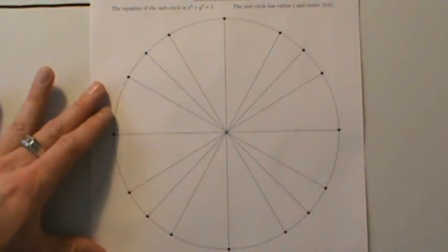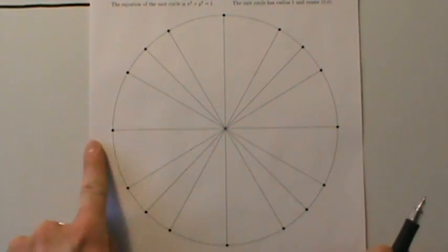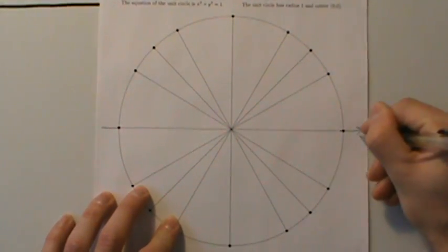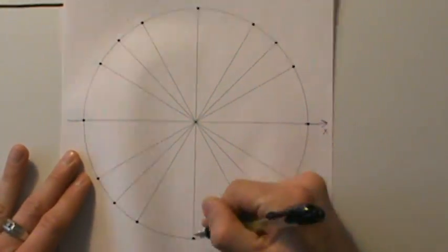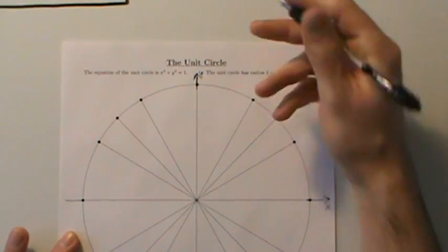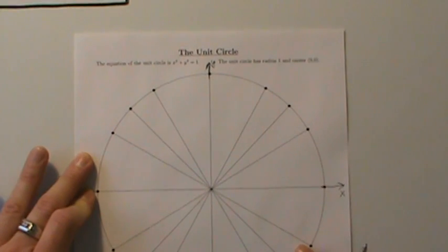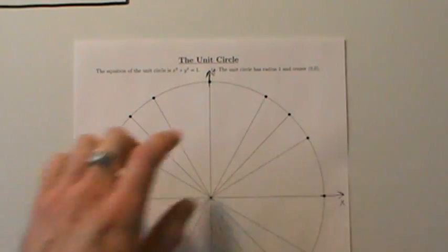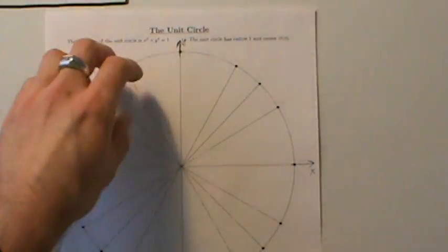If we think of this as being on the xy-plane, this right here is the origin — the point (0, 0). This is the x-axis and this is the y-axis. It really is just a special kind of circle — x squared plus y squared equals 1 — so the radius is 1 and the center is at (0, 0).